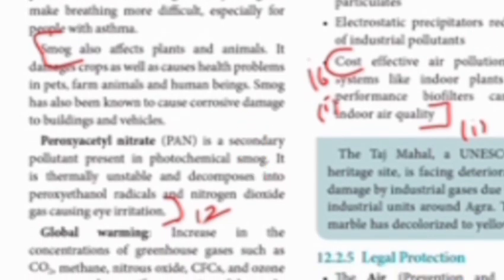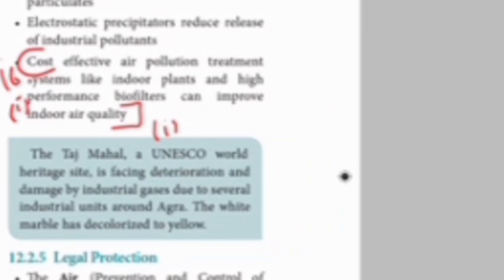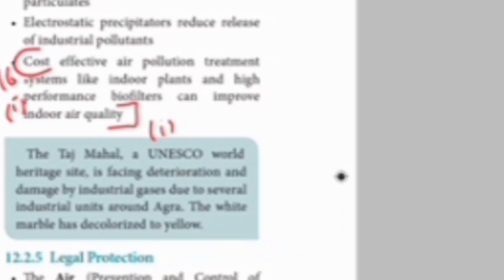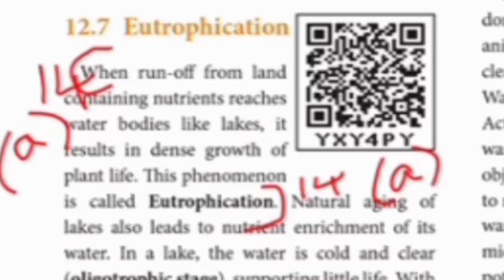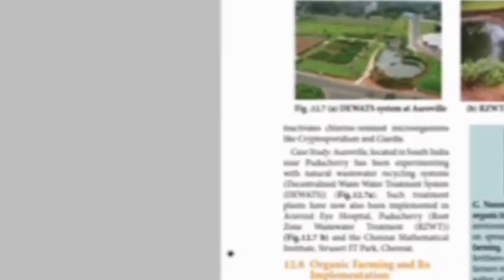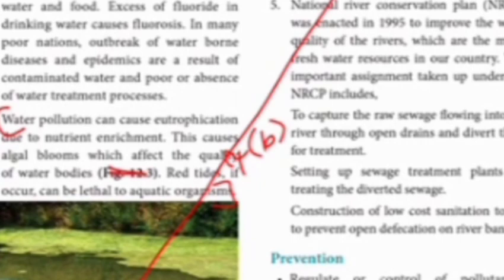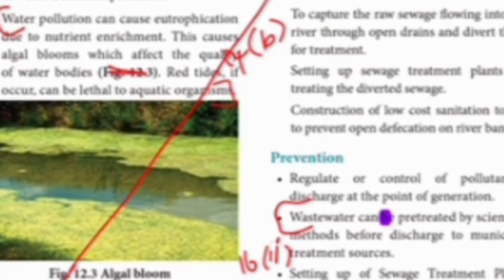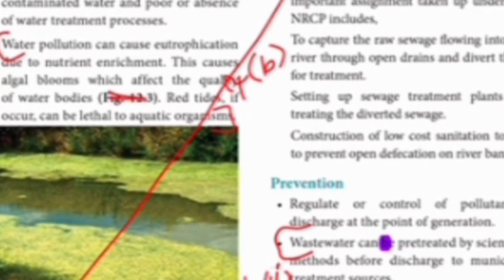14th one — note it down. Next 14th one, answer on page 210 is not there. 14th one answer — eutrophication — mark it, that is part A. It has A and B. B — on page 207, water pollution — organisms found there — that is 14th one part B answer.